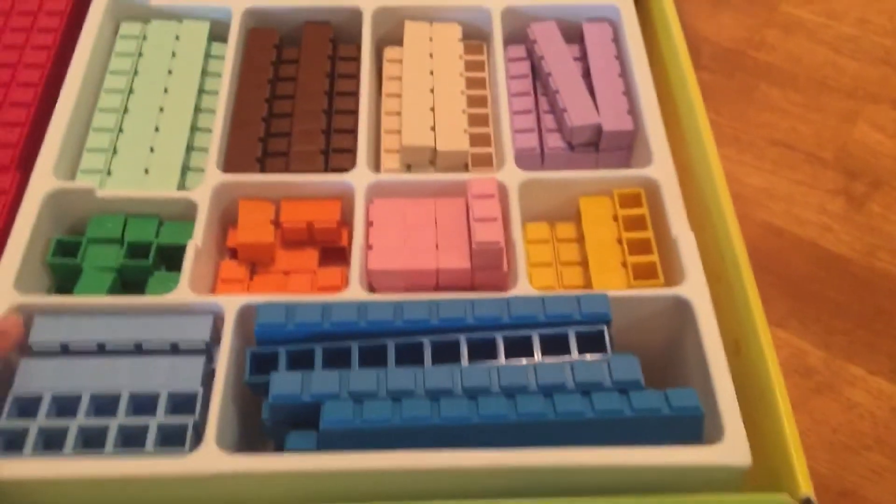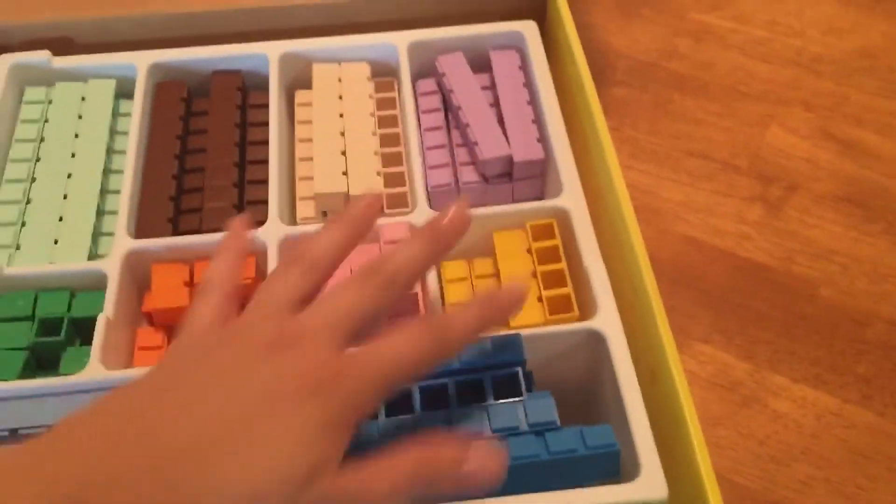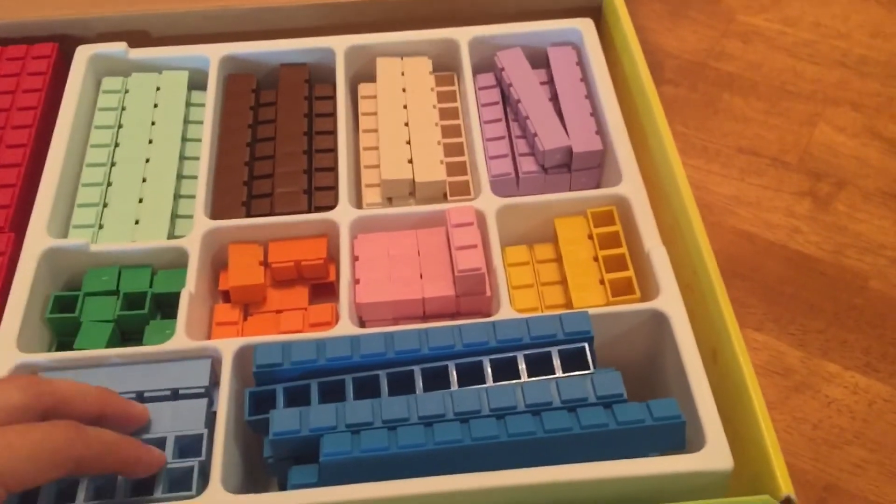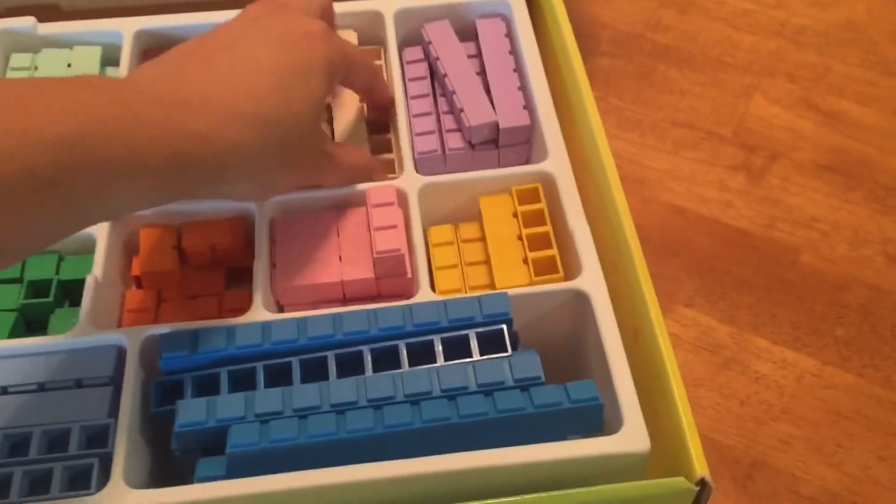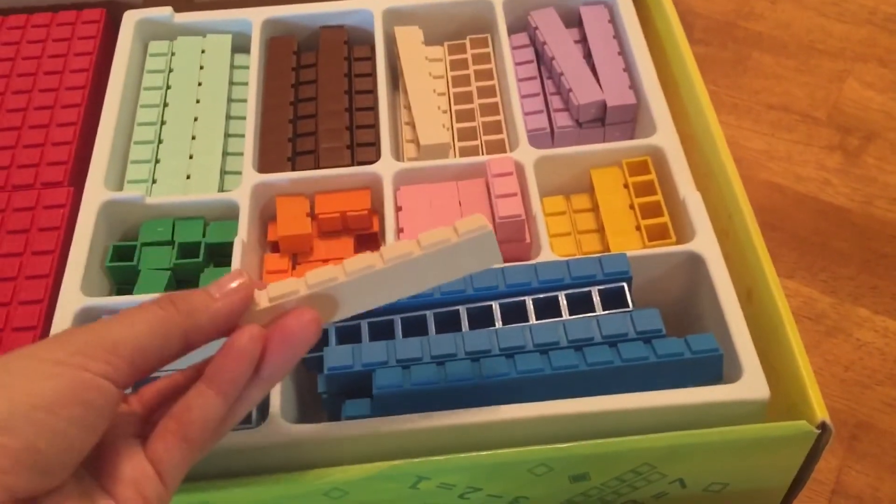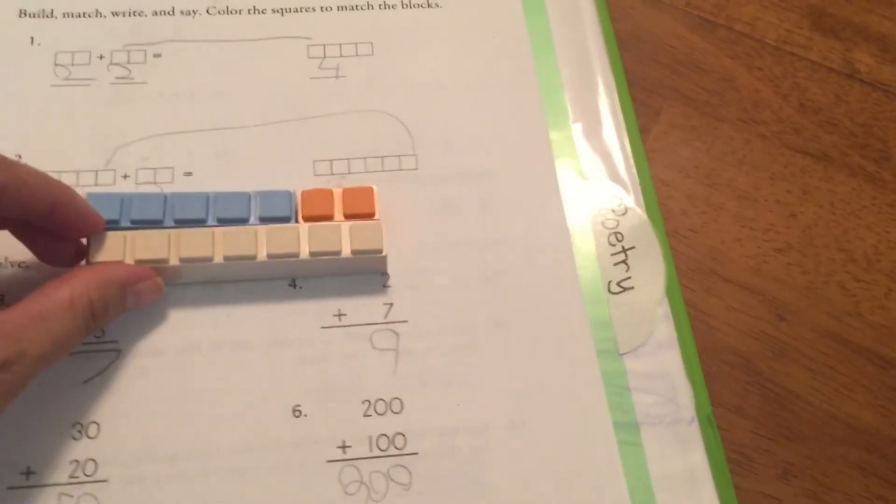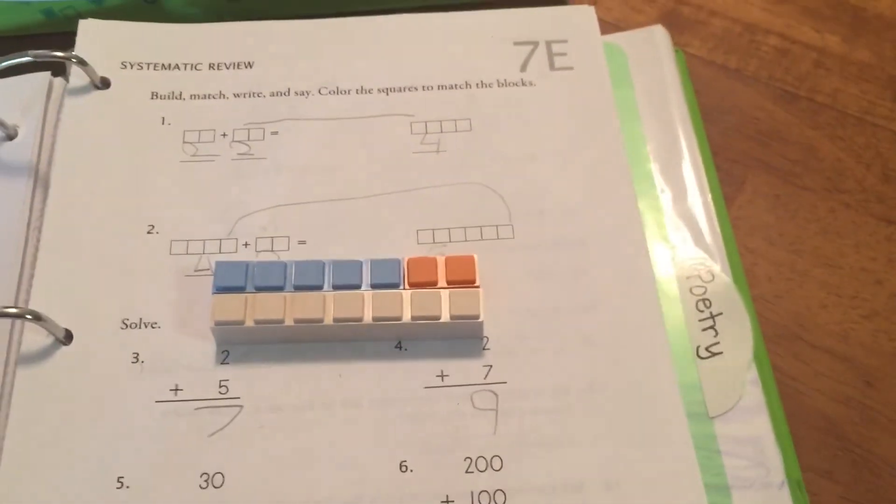They actually want the kids to memorize the colors and to know what color is what number. So they would know that this cream color is seven, and five plus two is the same as seven.